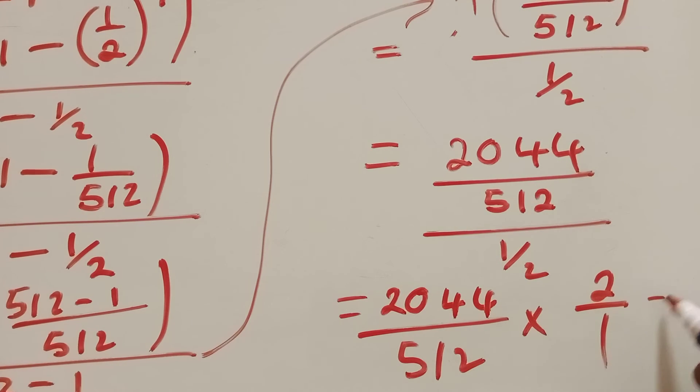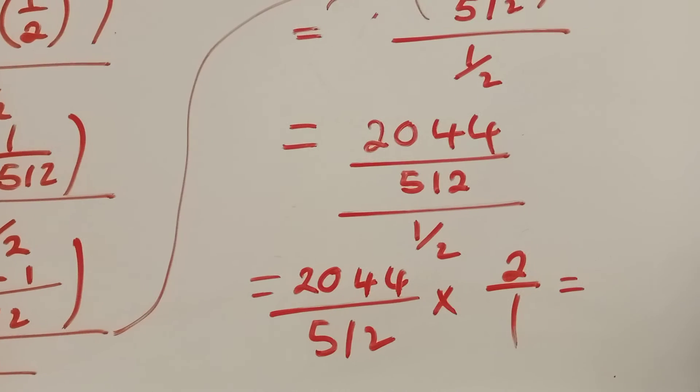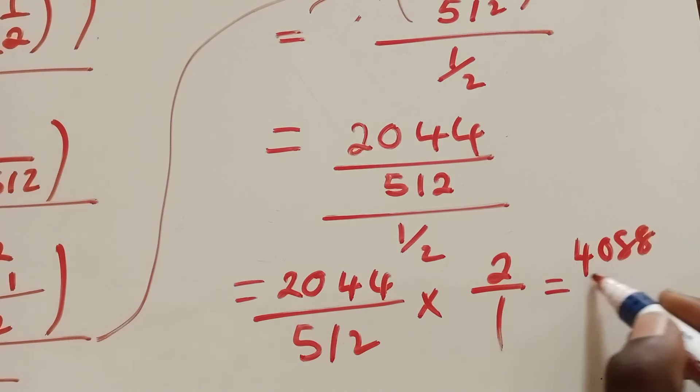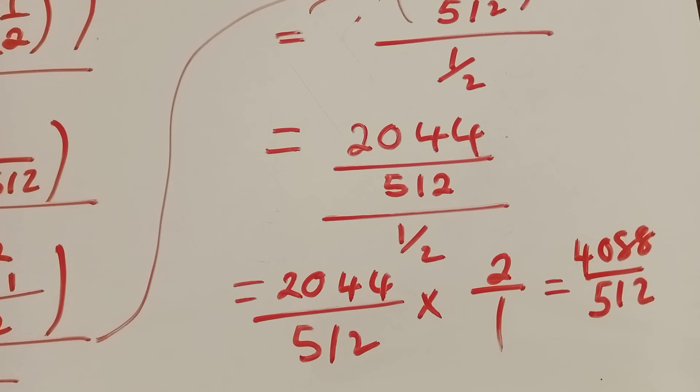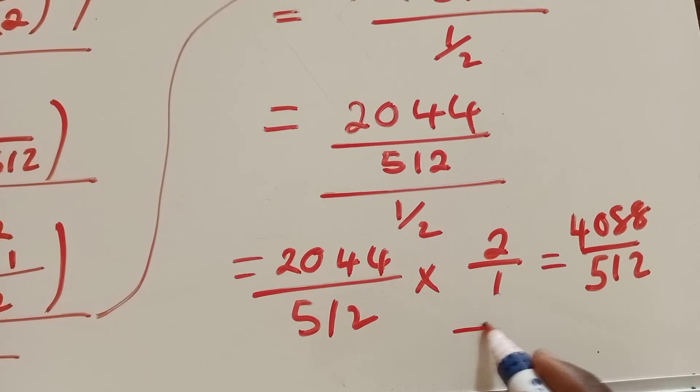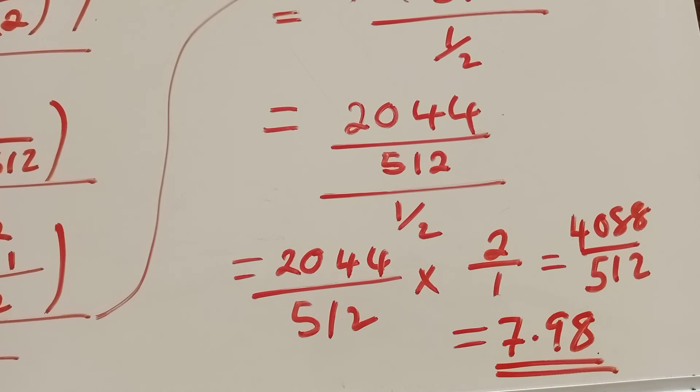So when you multiply there, this by this, it's giving us 4088 over 512. So we can reduce, we divide by 512. What are we getting? We are getting our final answer is 7.98 in three significant figures. So this is our solution. So we go to the last question.